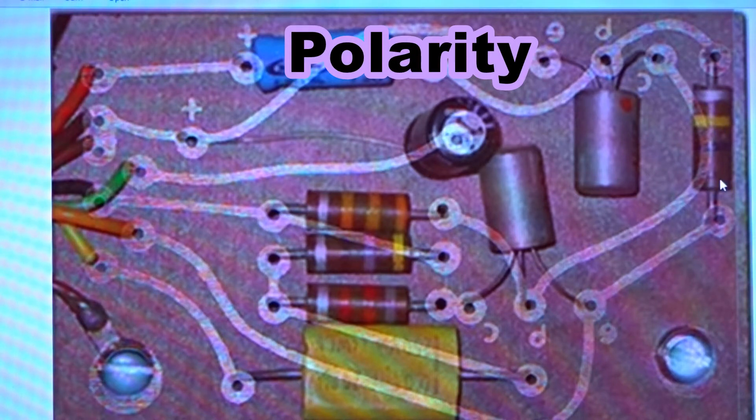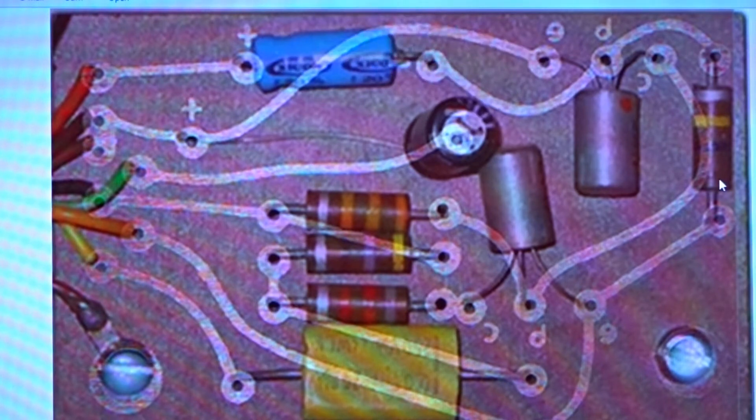If we follow it down, these do not have polarity so you can stick them in any way you want. It goes to this part of the trace, this trace comes down. You can clearly see this leg of this transistor connects into the circuit. We follow that up and around and it connects to the orange wire.